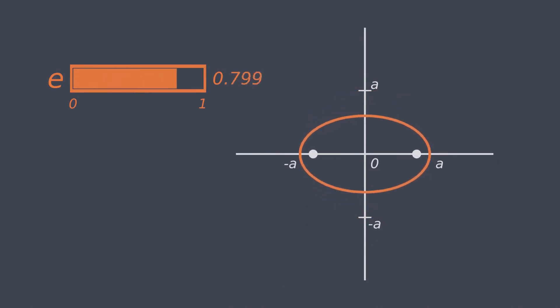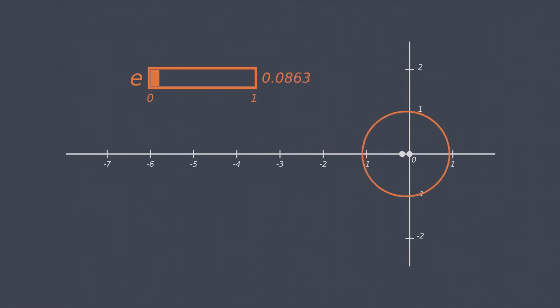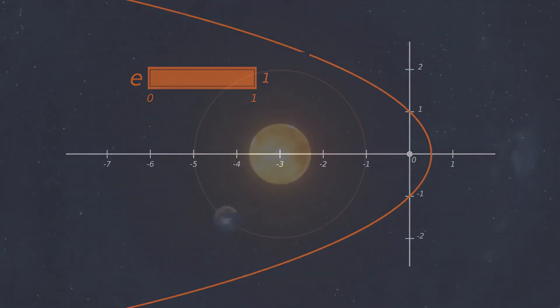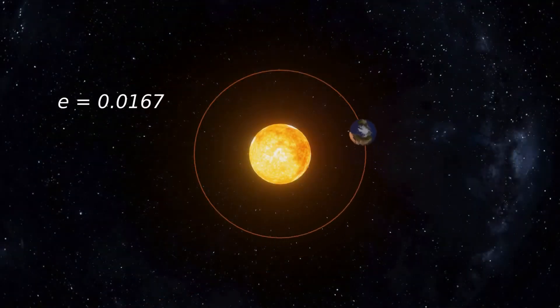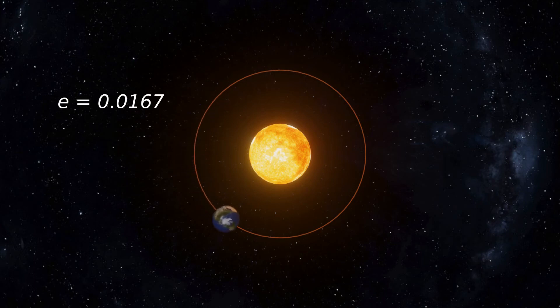An ellipse with an eccentricity of 0 is just a circle. If e is 1, we have a parabola. For our Earth, the orbit is an ellipse of eccentricity 0.0167, which is nearly a circle.